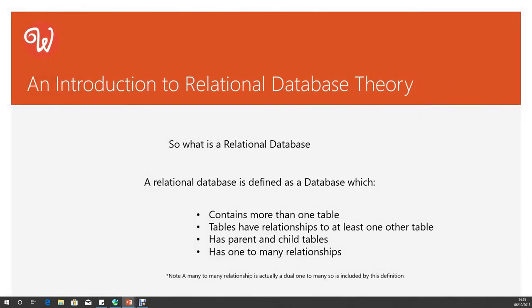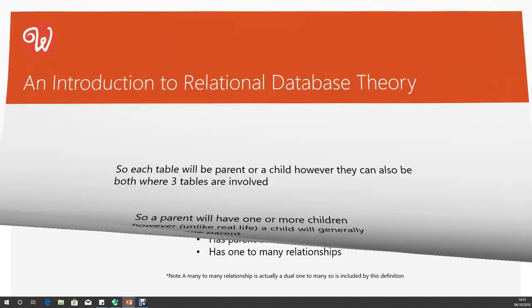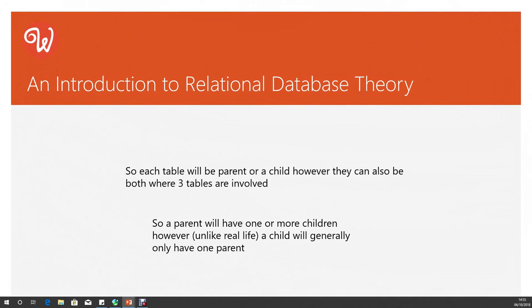So what is a relational database? It is defined as a database which has more than one table, those tables have relationships to at least one other table, it has parent and child tables, and has one-to-many relationships. A many-to-many relationship is effectively a bi-directional one-to-many relationship, so that is included within that definition. Each table will be a parent or a child, and can also be both a parent and child where three tables are involved — we'll see an example of that later. A parent will have one or more children; however, unlike real life, a child will generally only have one parent.